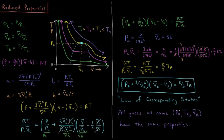This equation is called the law of corresponding states. It says that all gases at the same reduced pressure, reduced temperature, and reduced molar volume will have the same properties because they obey the same equation of state. For a given pressure, molar volume, and temperature relative to the critical point of that particular gas, when you're at the same values of reduced properties, you get the same behavior — the same compressibility factor, energy, and so on.